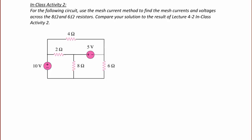In-class activity 2. For the following circuit, use the mesh current method to find the mesh currents and voltages across the 8 ohm and 6 ohm resistors. Compare your solution to the result of lecture 4-2 and in-class activity 2. What you should note here is that we're presenting analysis techniques, and sometimes one is better than the other, but whether you choose mesh current or node voltage, you can actually get the same answers, and we will see that on this problem here.